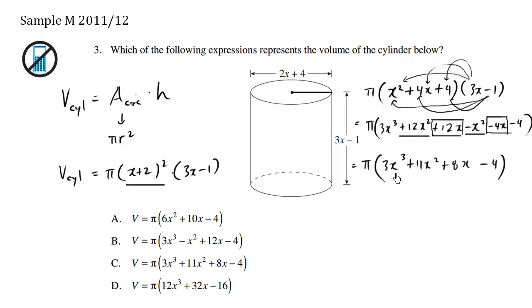So when I try looking at the choices available, this is not right, this is not right. And I have a positive 11x² + 8x - 4. C is the correct answer.